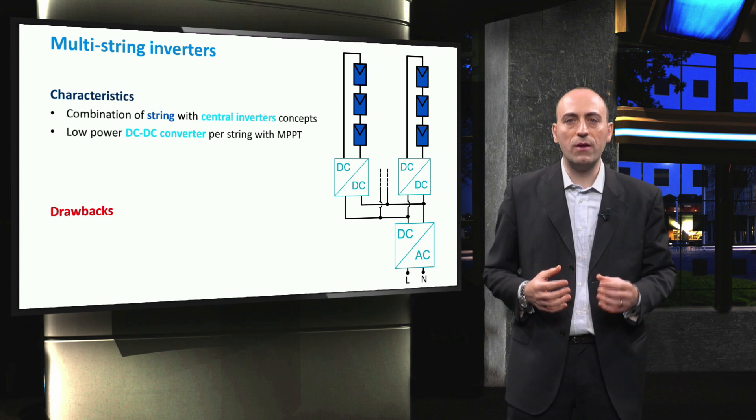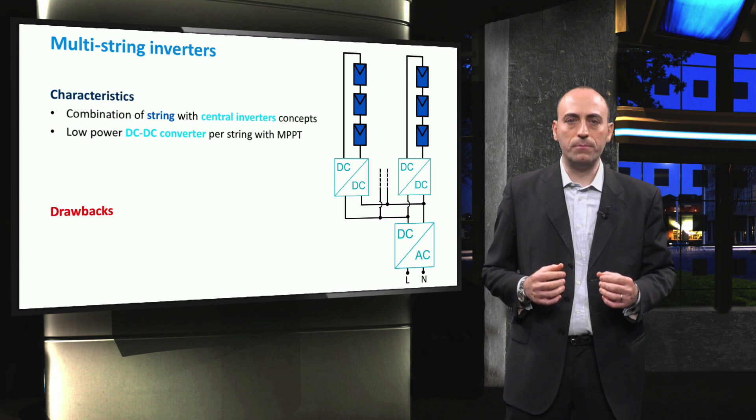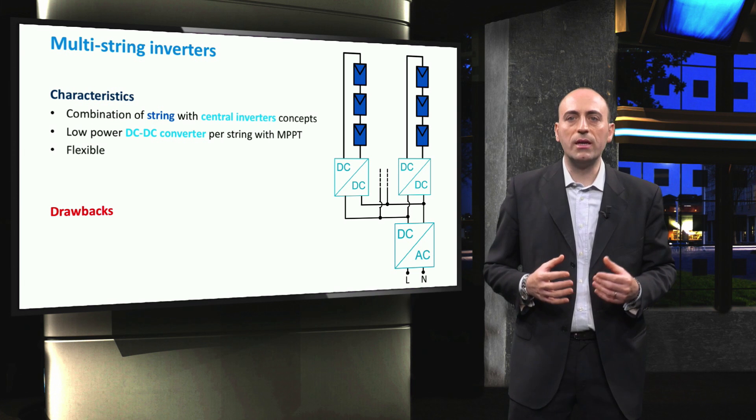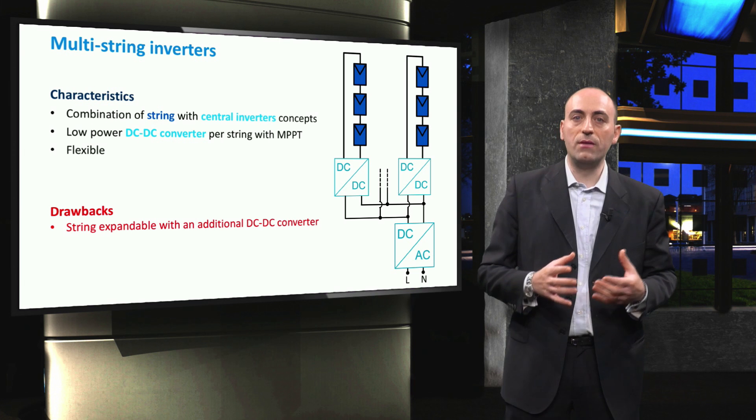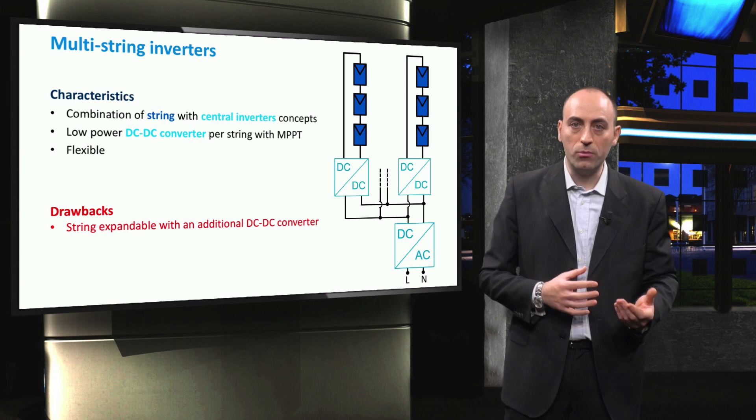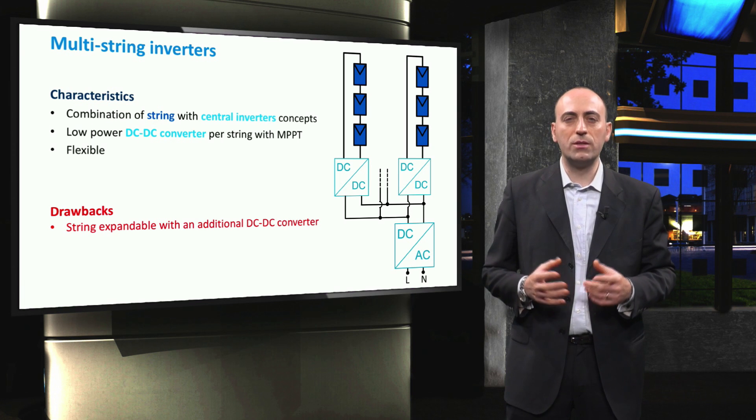In this architecture, we can easily add additional strings, but not only you have to be careful that the inverter can handle the additional power input, but you also have to buy an additional DC-DC converter, which is a drawback.